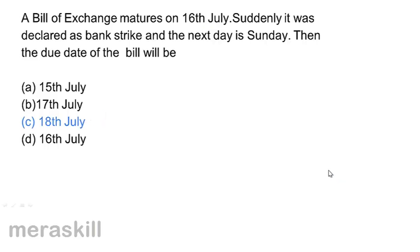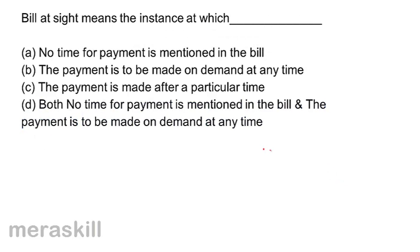Bill at sight means the instance at which — what are the options? A) No time for payment is mentioned in the bill; B) The payment is to be made on demand at any time; C) The payment is made after a particular time; D) Both — no time for payment is mentioned in the bill and the payment is to be made on demand at any time.